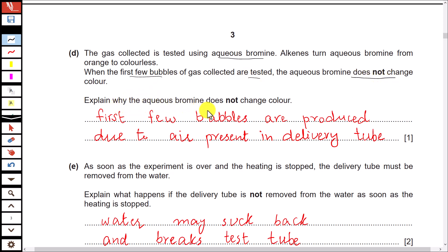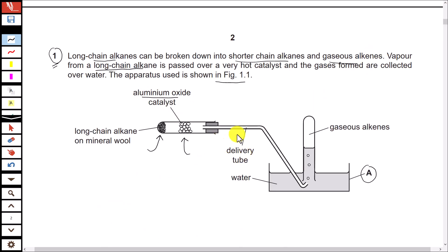Explain why aqueous bromine does not change color. Look at this diagram again. Before the alkene gas is produced, there is air inside this delivery tube. So once alkene gas is produced, it displaces the air present already in the delivery tube, and first few bubbles of the gas that are collected over water are due to air and not alkene.